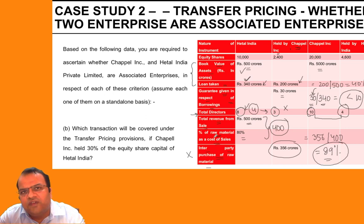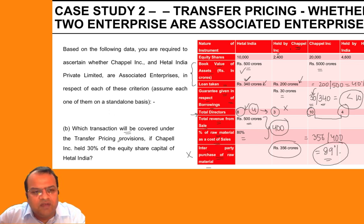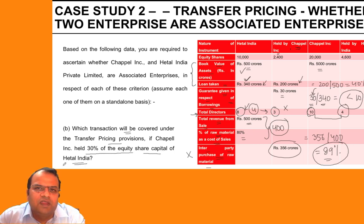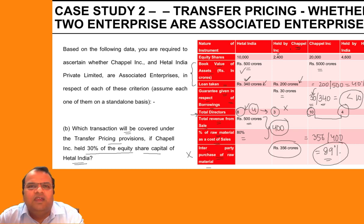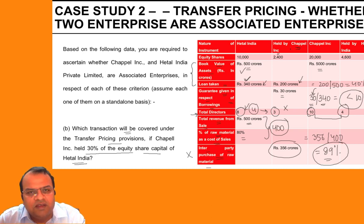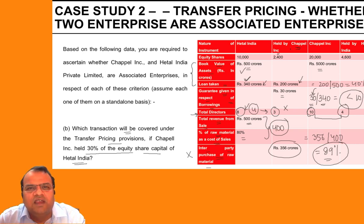So effectively, in none of the criteria have the two become related parties. The next question is: which transactions would be covered under transfer pricing provisions if Chapel Link held 30% of equity share capital of Hathal India? If they owned 30%, that is more than 26%, so the two would be related parties. This brings up one of the most important rules in transfer pricing: if you become an associated enterprise under any one of the criteria, then all transactions with that party will be considered for transfer pricing analysis and arm's length pricing.